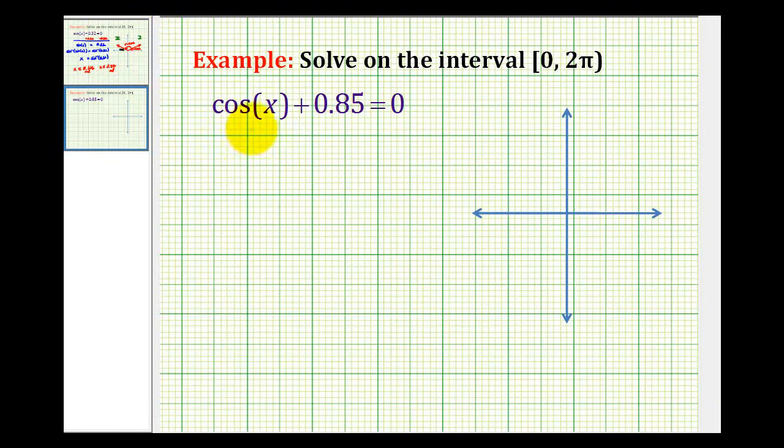Here we want to solve the given trig equation on the interval from zero to two pi. It looks like a pretty straightforward equation, so let's go ahead and isolate the cosine function by subtracting 0.85 on both sides. This will be zero. So we have cos(x) equals negative 0.85. So we want to determine the angles on this interval that have a cosine function value of negative 0.85.